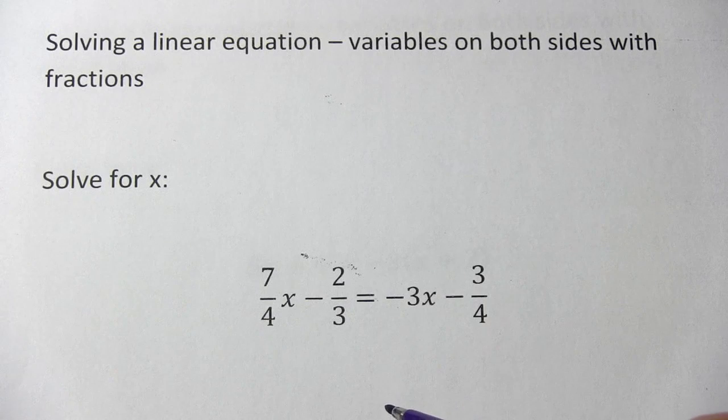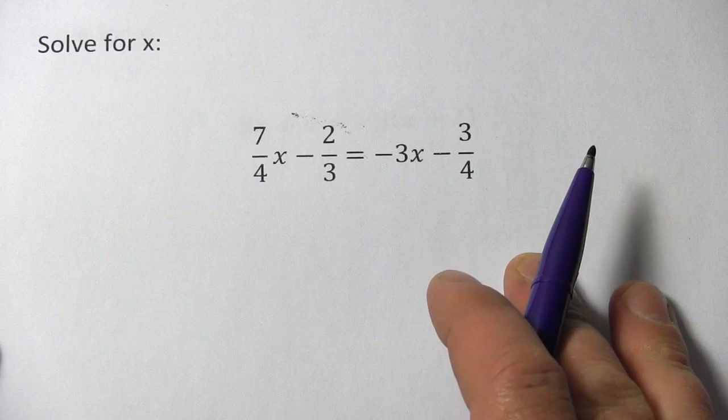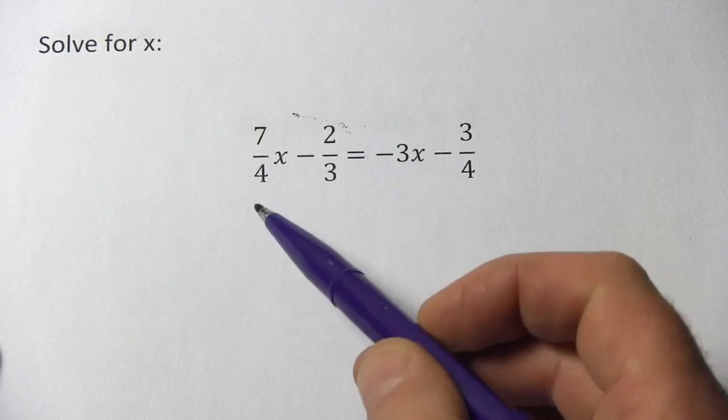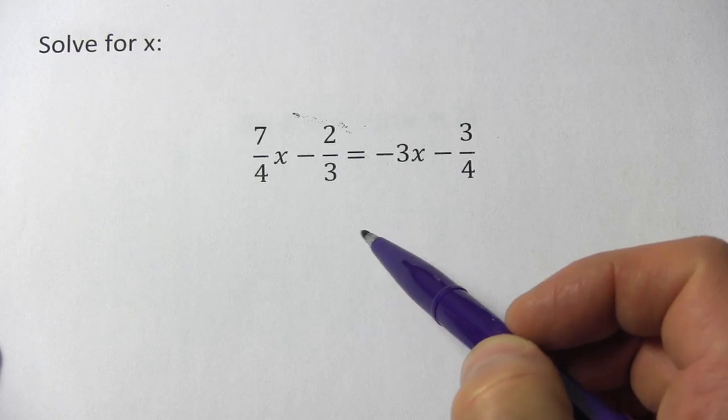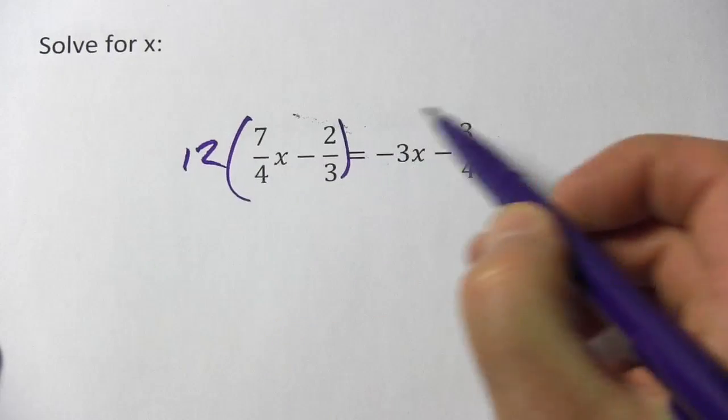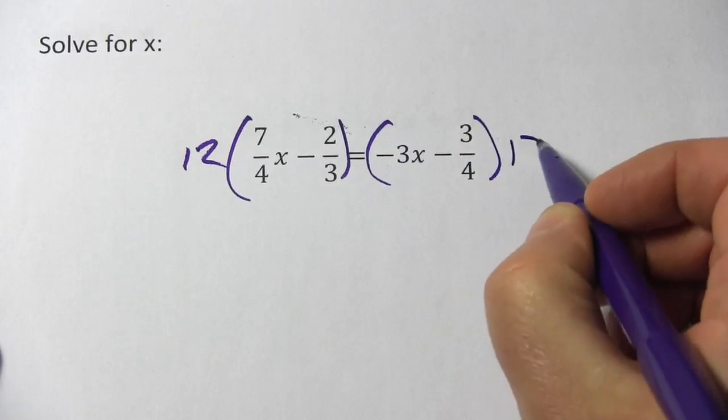I think we should deal with the fractions first, and the way I like to do that is take a look at the denominators. We've got 3s and 4s, so I know if I multiply by 12 all of those denominators can disappear. So that's what I'm going to do - I'm going to multiply both sides of the equation by 12.